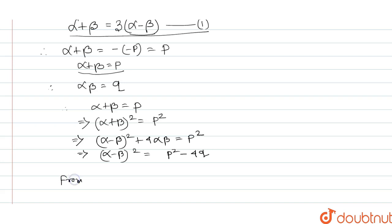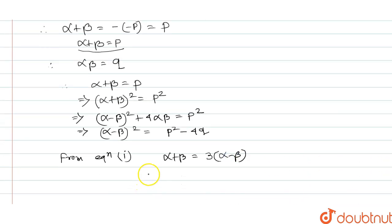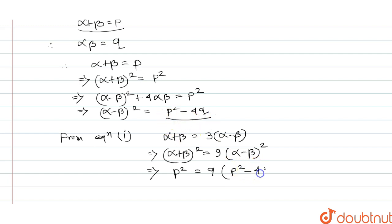From equation 1, the condition is alpha plus beta equals 3 times alpha minus beta. Substituting: p squared equals 9 times alpha minus beta squared, which equals 9 times the quantity p squared minus 4q.